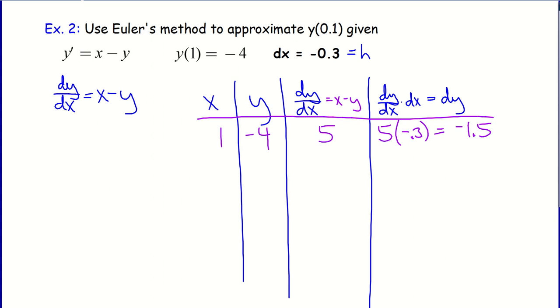If I was at negative 4 for the y value, and now my change in y is negative 1.5, then that would make my new y value negative 5.5. The x value, I have changed x by moving leftward 0.3 units. So that would be the x value of 0.7.